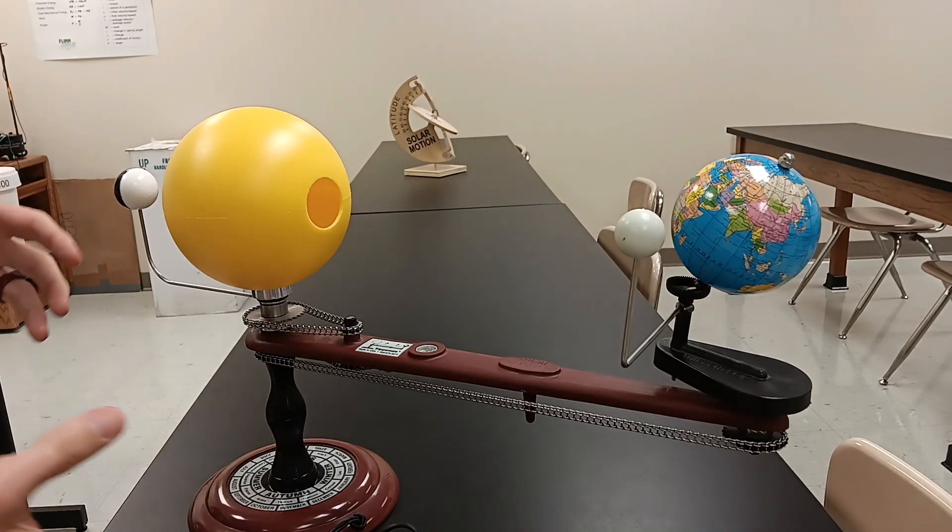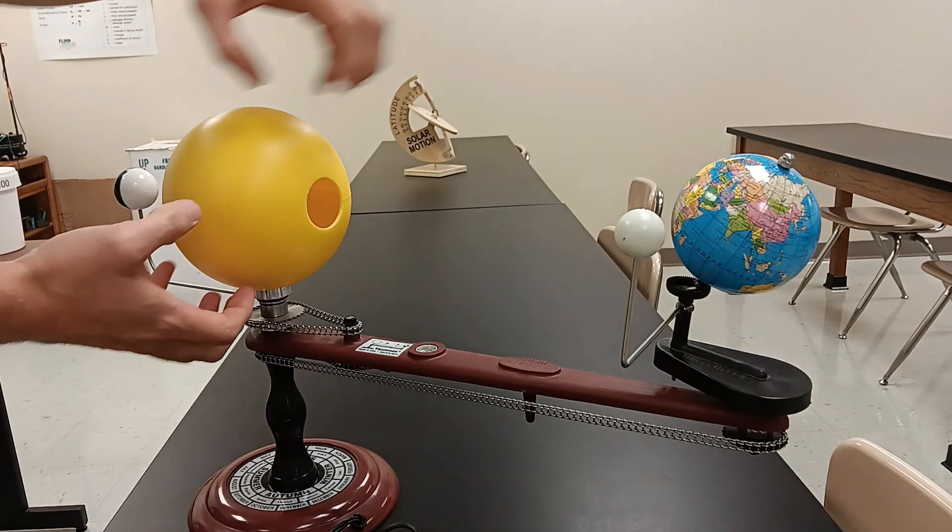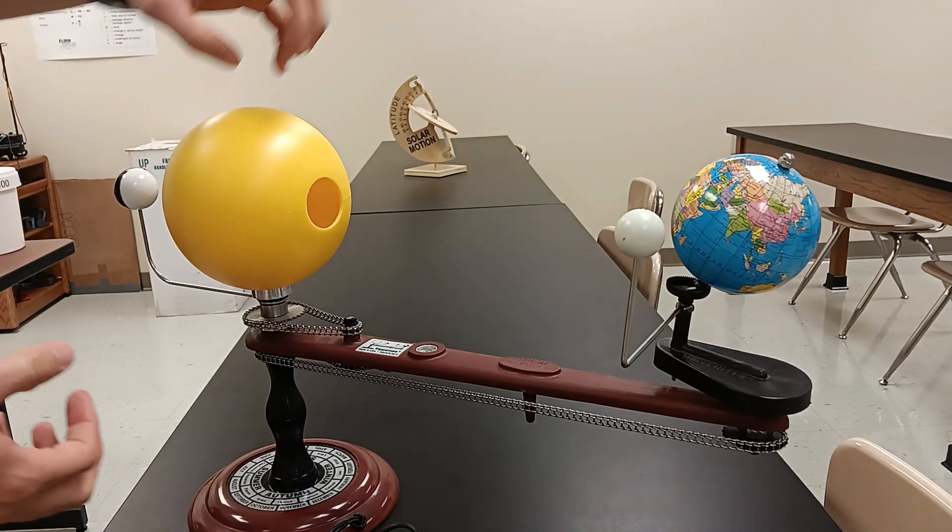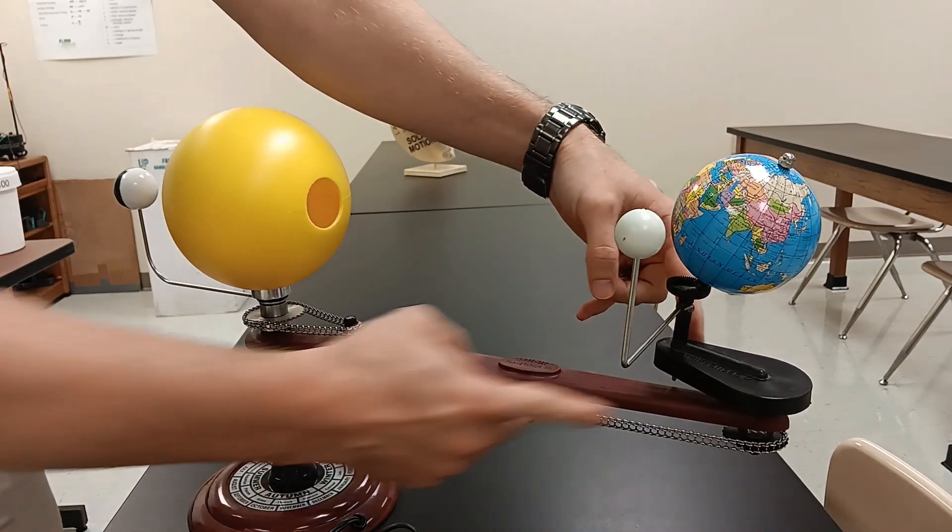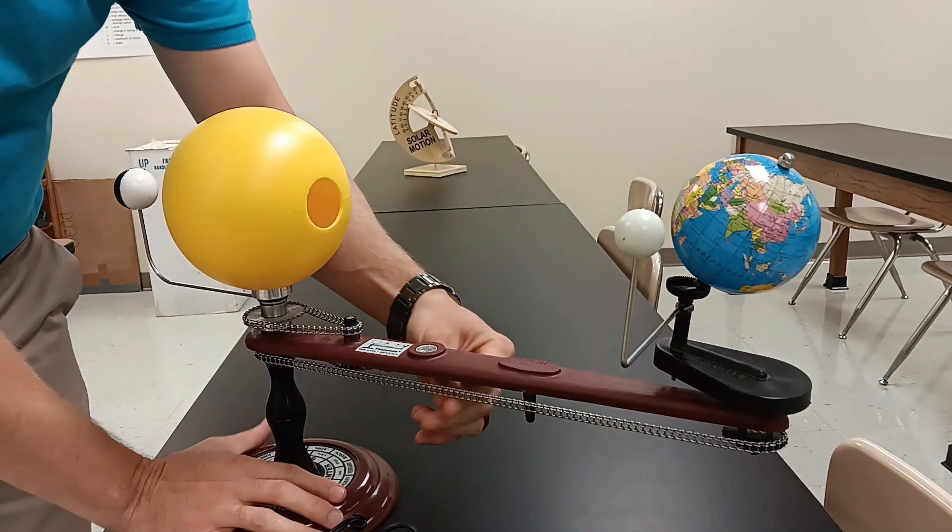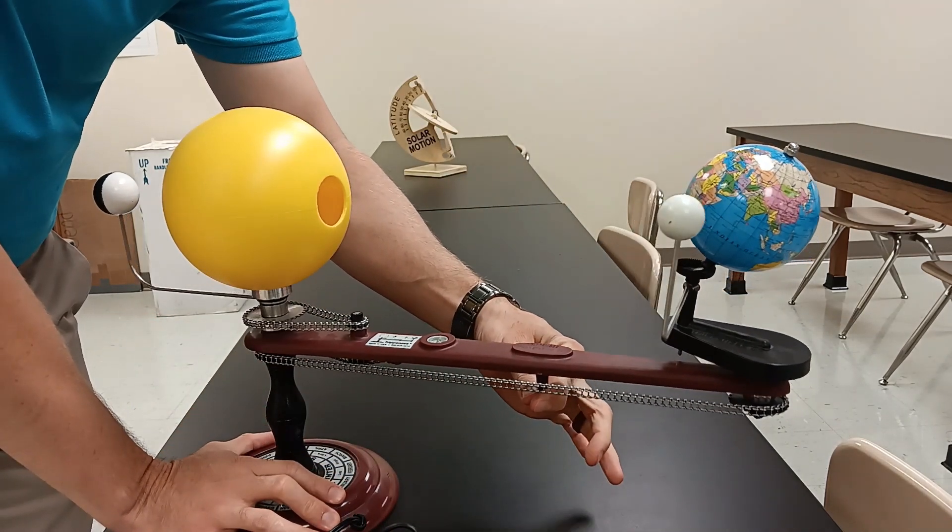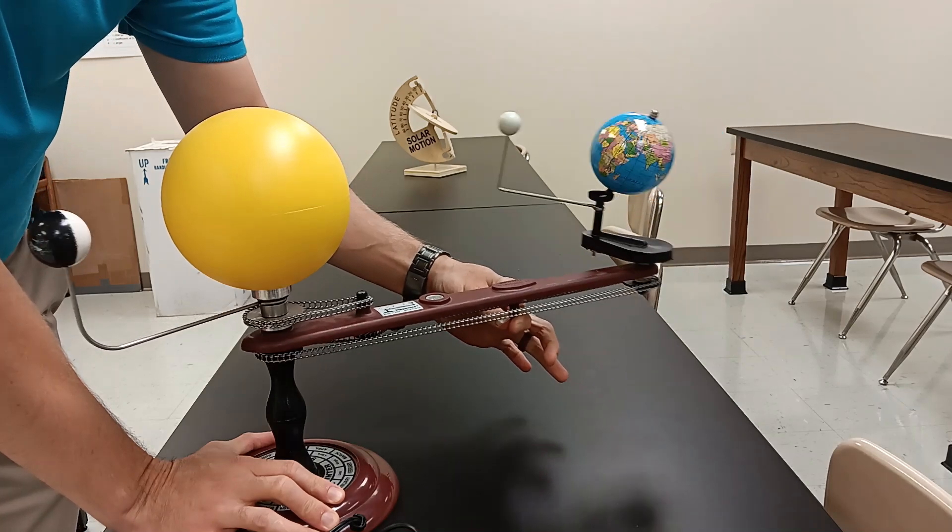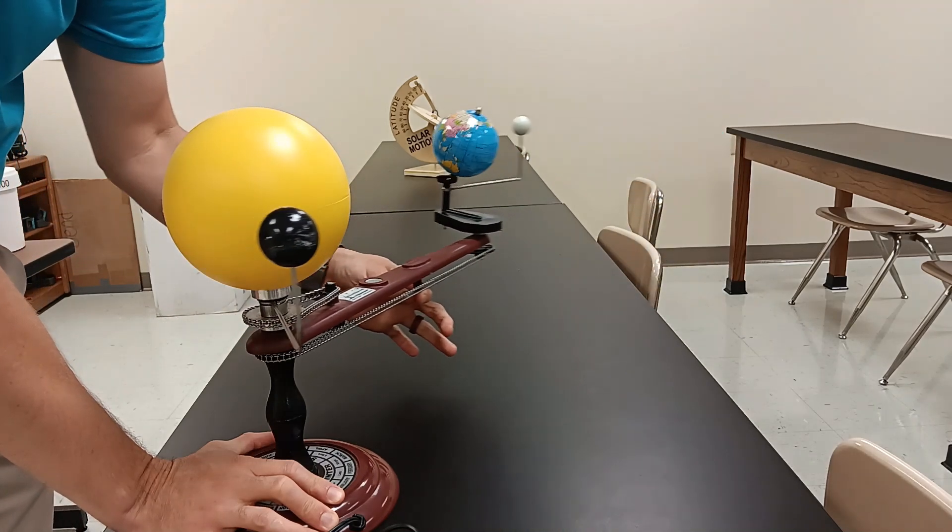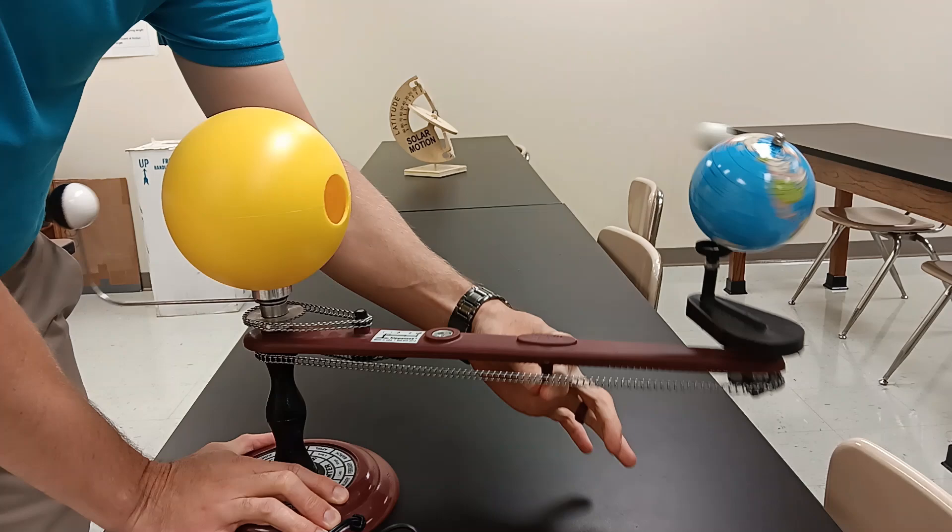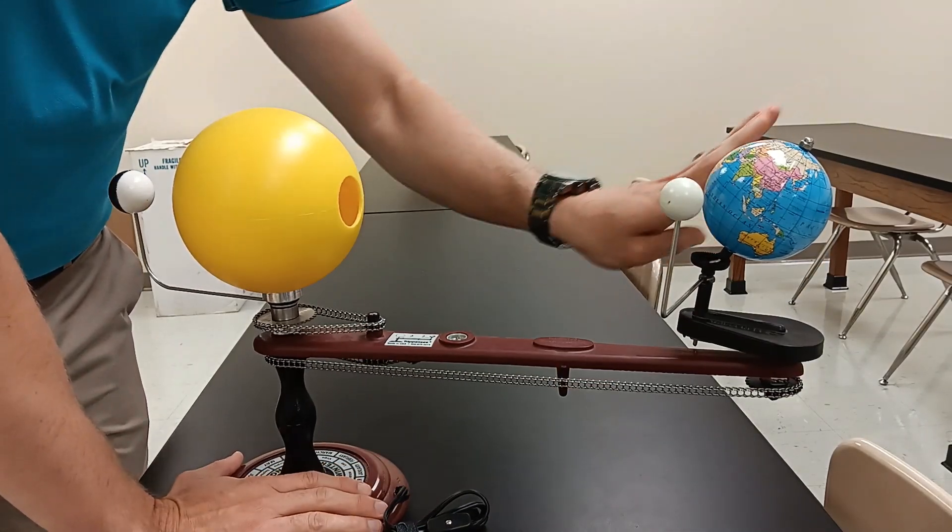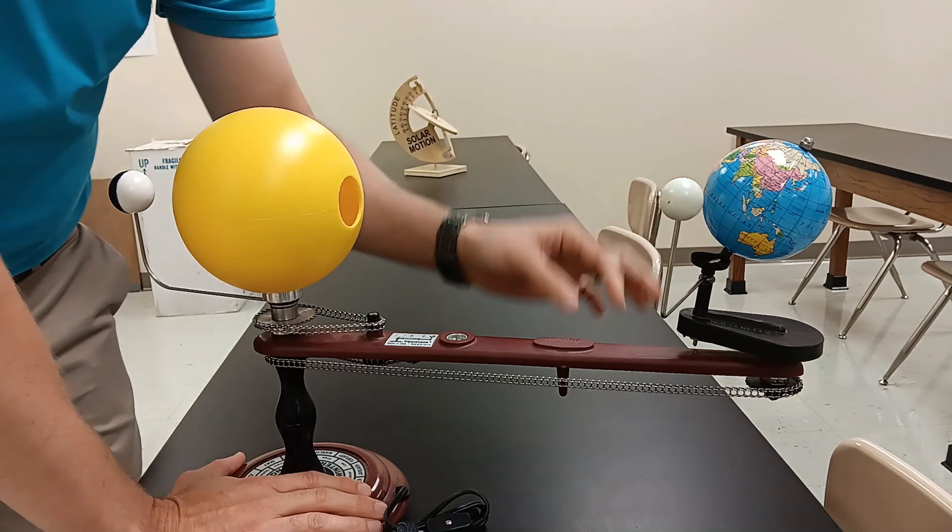So the first model is a planetarium. So we have the sun, the earth, the moon, representation of Venus over here as well. And what I want you to notice is this piece right here, as I move the earth around the sun, this piece allows the distance from the earth to the sun to change here. But notice also the tilt of the earth itself, this 23 and a half degree incline.